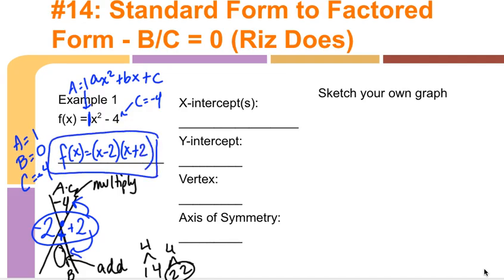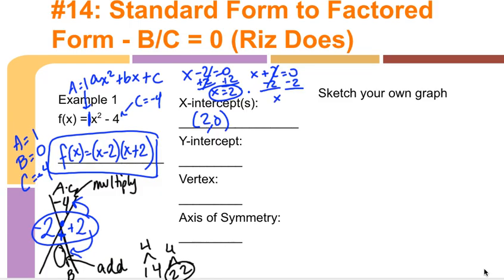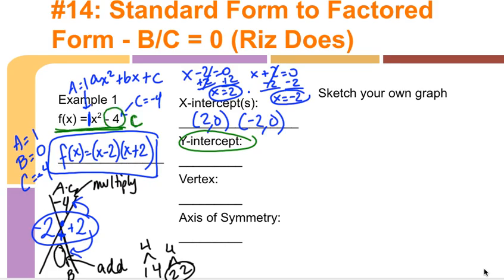For the x-intercepts: x - 2 = 0 gives x = 2, so the intercept is (2, 0). And x + 2 = 0 gives x = negative 2, so the intercept is (-2, 0). For the y-intercept, in standard form the C value is the y-intercept, so it's (0, -4). You can verify by plugging in: f(0) = 0² - 4 = -4.